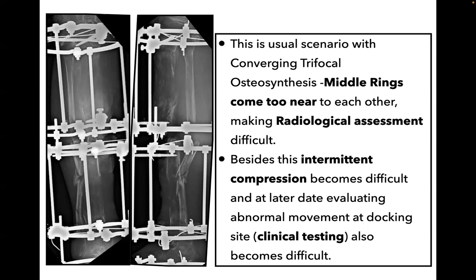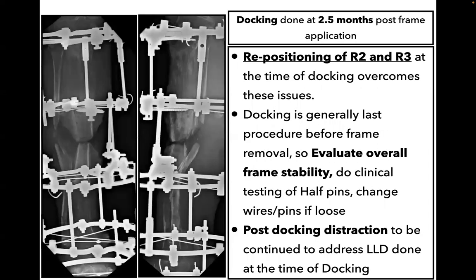In order to overcome this difficulty, what we do is reposition ring 2 and ring 3 so that there is adequate space. This allows good radiological assessment, and in the event of intermittent compression, we can have adequate space. At the time of clinical testing, one can properly appreciate whether there is abnormal movement or not.